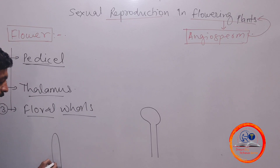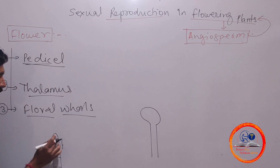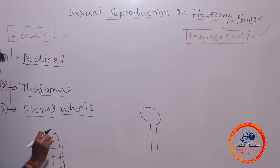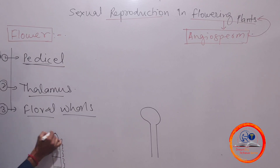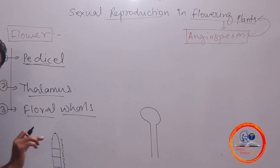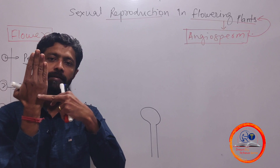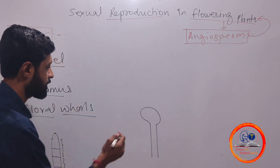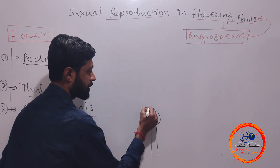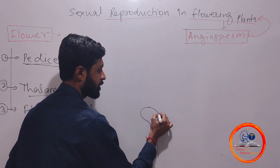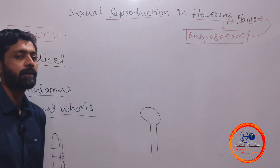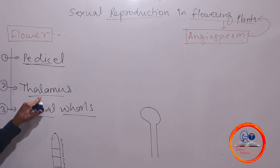The thalamus has nodes and internodes — specifically 4 nodes and 3 internodes. These nodes are condensed together, which is why we call the thalamus a condensed structure. Otherwise, if elongated, it would have visible internodal distances between each node.